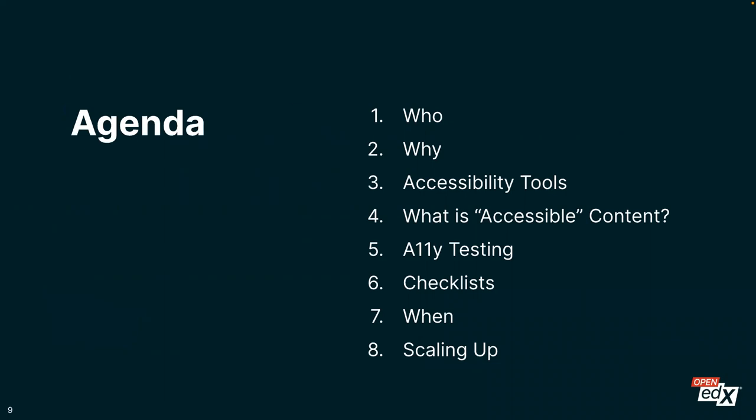Here's the agenda: who are we talking about in terms of people with disabilities? Why do we do this? What kinds of accessibility tools do these people use? What is accessible content in practical terms? How do you do accessibility testing? I have some checklists you can use to make sure you've got all the bases covered. And when should this work be done, and how does that benefit in scaling this up beyond what we normally think about as accessibility services in higher education?